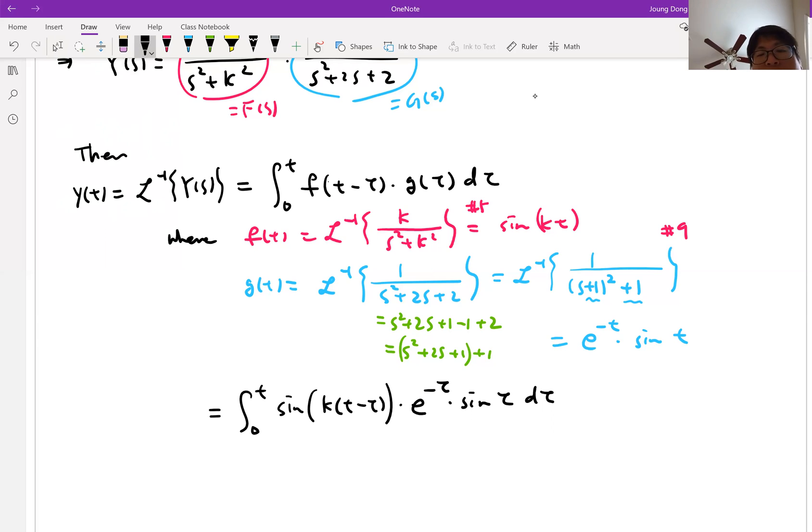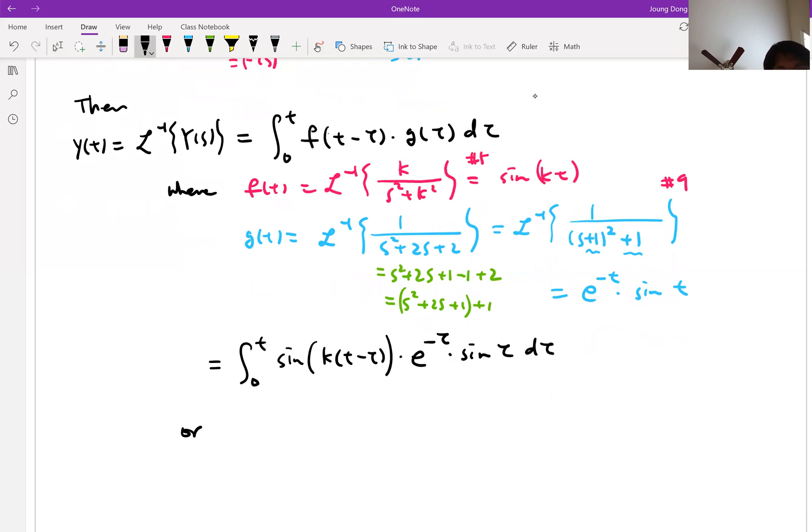But again, if you want to do it the different way, I mean integral 0 to t f of tau times g of t minus tau, that's totally fine for practice. Let me write. Or we can say integral 0 to t sin k tau and e to the minus t minus tau times sin of t minus tau d tau. This is also totally fine. They are exactly the same.